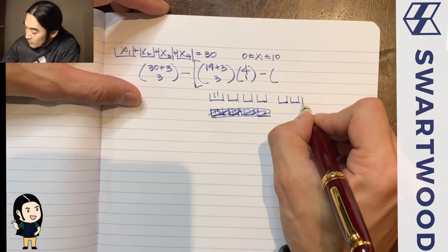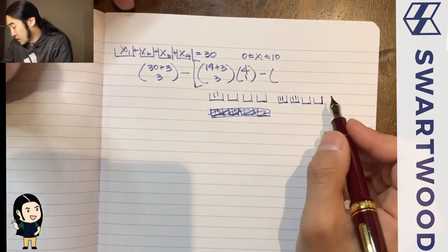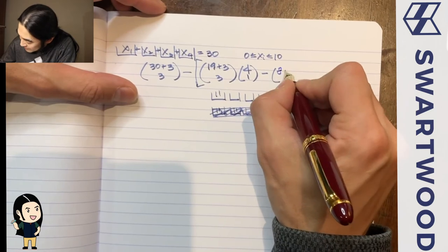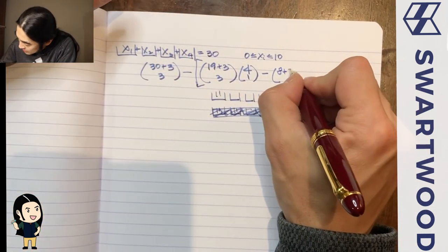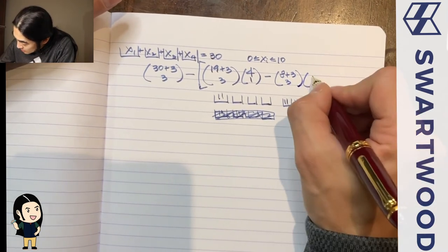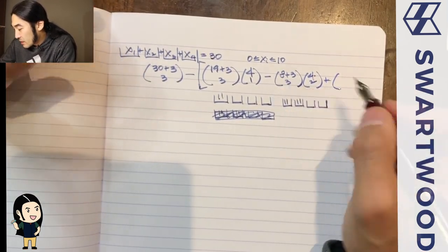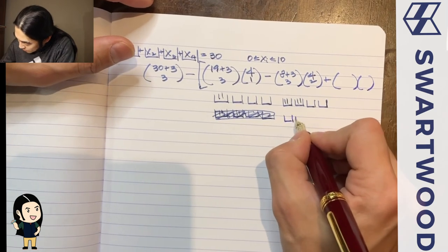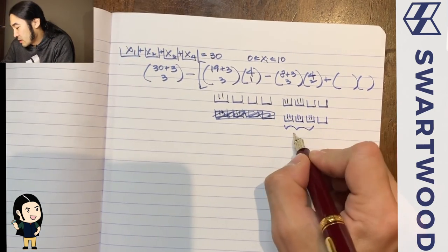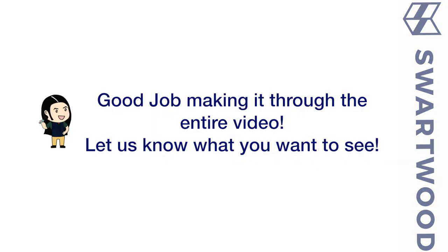It's also possible two variables both exceed 10. Force 11 in each — that uses 22, leaving 8, and you need 3 dividers for 4 containers: 8 + 3 choose 3. The number of ways to choose which pair is 4 choose 2. For triple violations, 11 + 11 + 11 = 33 > 30, so that's impossible. Hopefully this gives you a feel for these PIE problems!